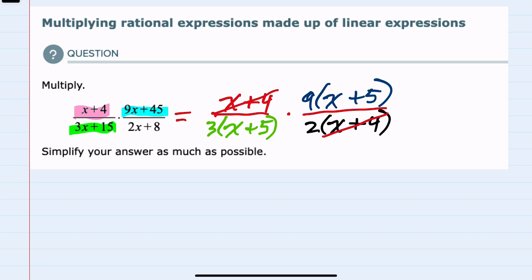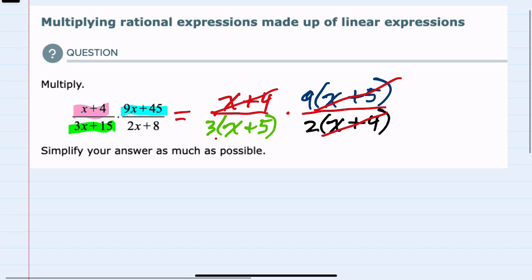The same is true for the x plus 5's. We have an x plus 5 in the top and an x plus 5 in the bottom. Those will cancel. And then even for our coefficients, we have a 9 in the top and a 3 in the bottom. Those are both divisible by 3, so we can say that 3 goes into 3 once and 3 goes into 9 three times.